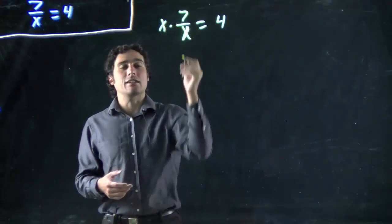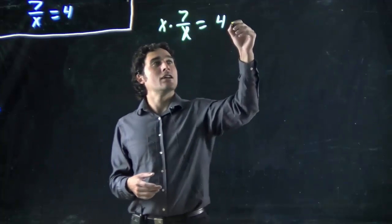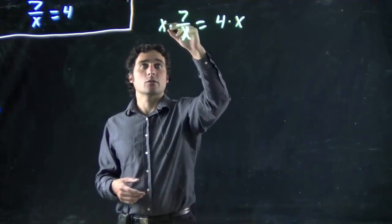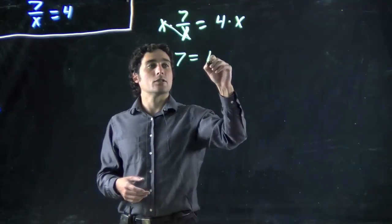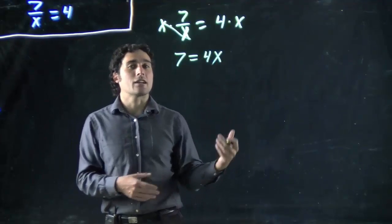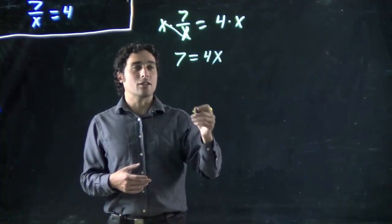And remember, the dot representing multiplication, good idea in this case so I don't get too confused. Also multiplying by x over here. So these will cancel. What do I got? 7 equals 4x. And now this looks more familiar. This looks like a problem we've solved before. So what do I have to do? Get x on its own.